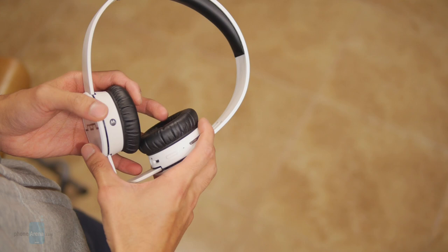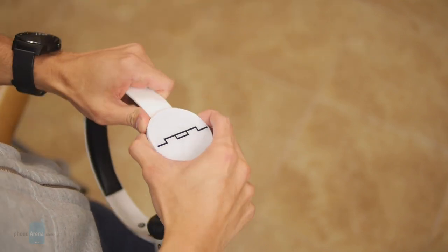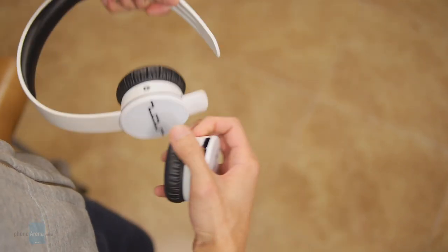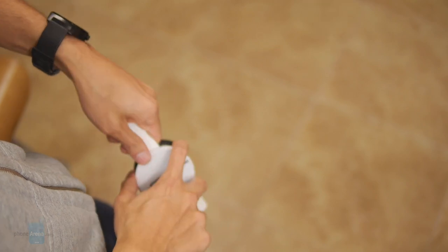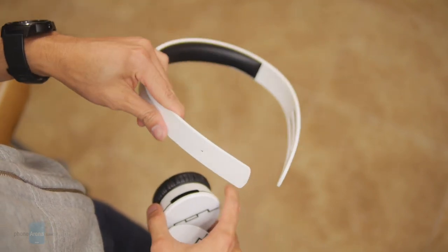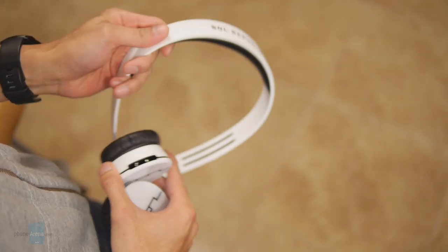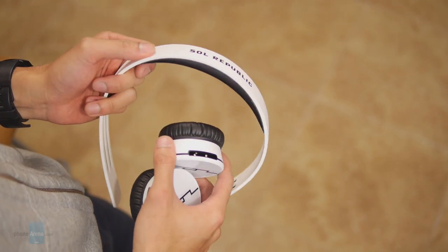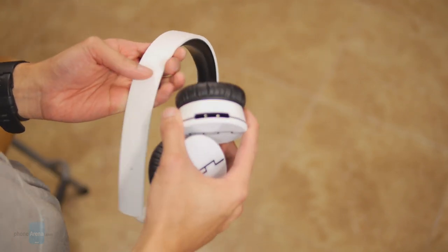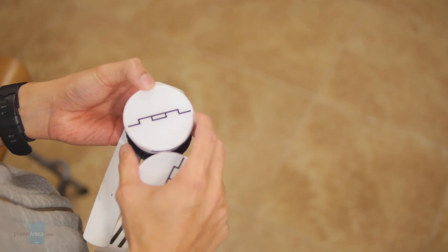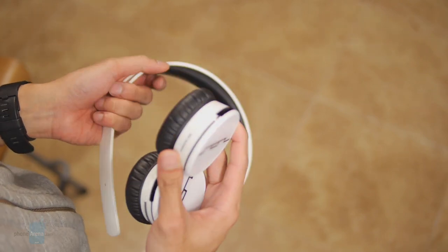Now what I mean by modular design is that you can actually remove these sound engine speakers and also interchange the headband with different options, different colored ones. The one we have here is the ice white version, but you have three additional colors to choose from. So there's that nice level of personalization that we don't get out of other headphones.